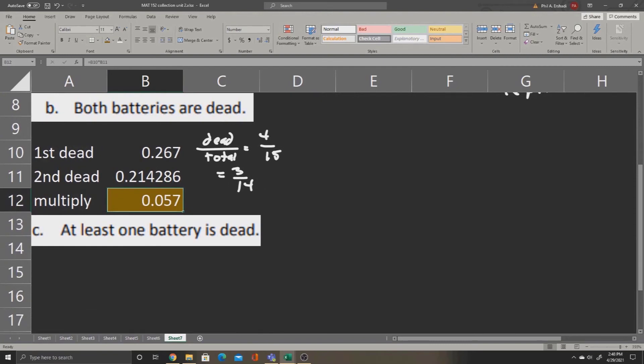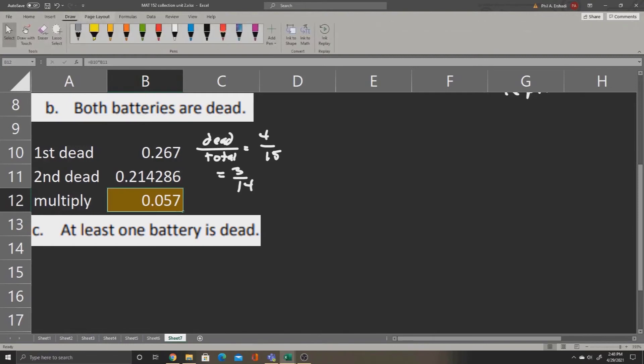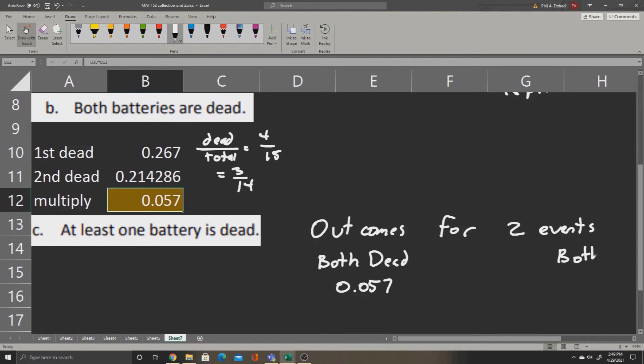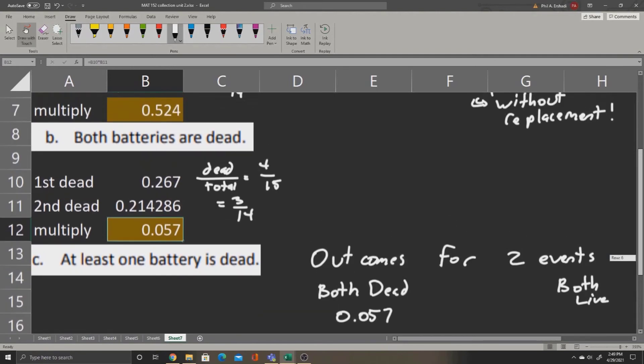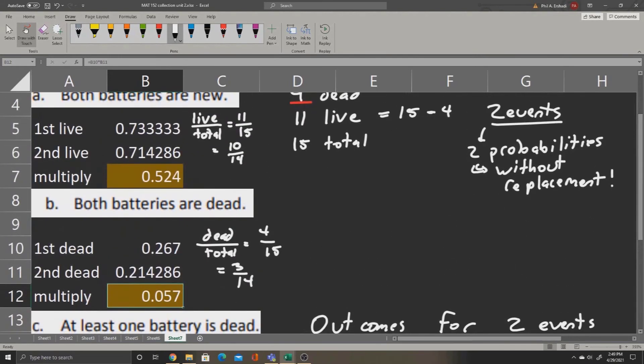This is going to be a slightly more complicated situation. Now we find the probability that at least one battery is dead. Let's go over the outcomes for these two events before we go any further. Now, one thing that could happen is we could have both batteries dead. We know this is 0.057. We could have both of them be alive. We calculated that probability in Part A. That probability was 0.524.